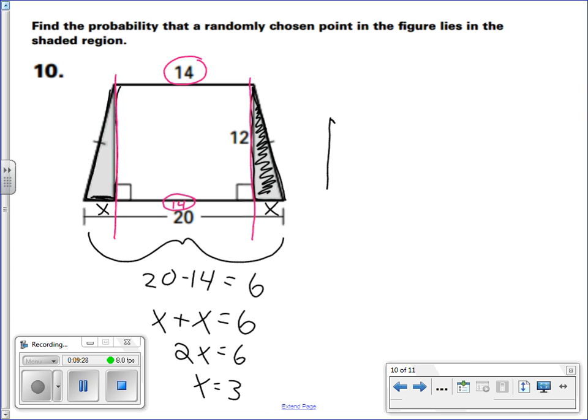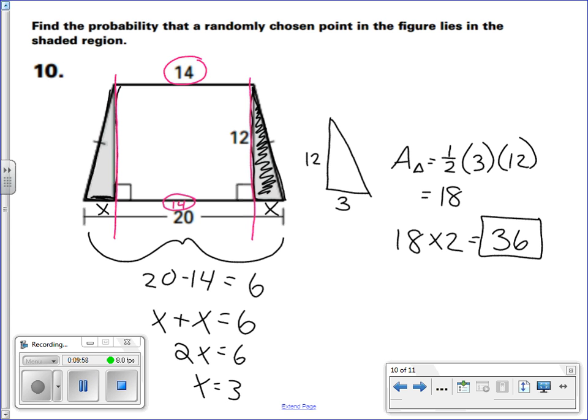I know that this is 12, this is 3. So the area of this triangle is equal to 1/2 times 3 times 12, which is equal to 18. Well, I don't just have one triangle, I have 2. So 18 times 2 is equal to 36. That is my area of the shaded region.